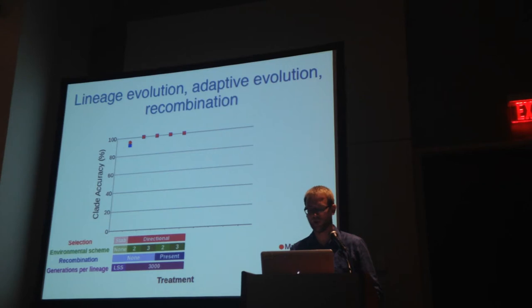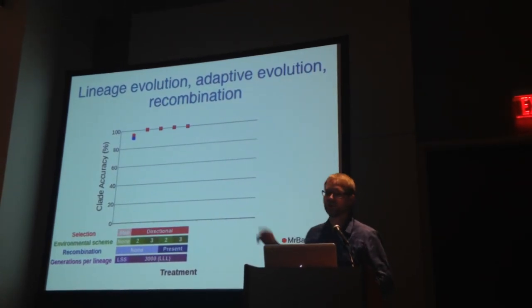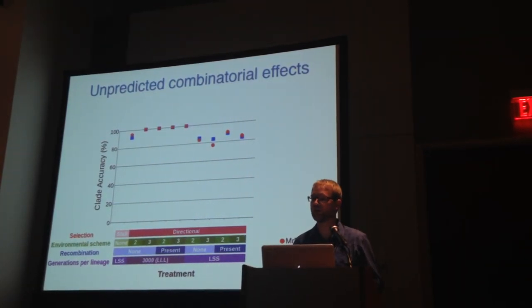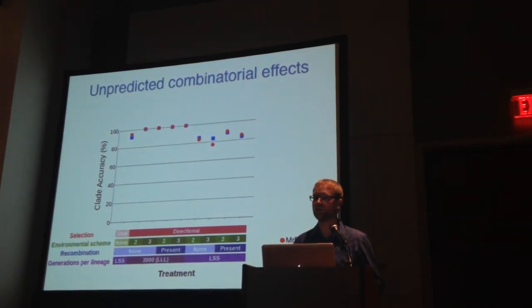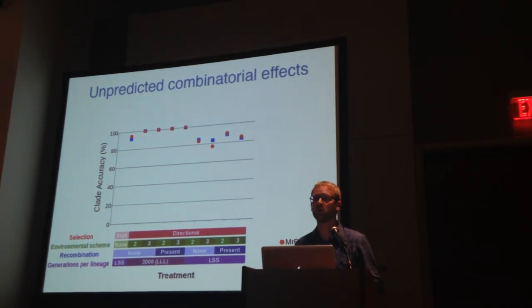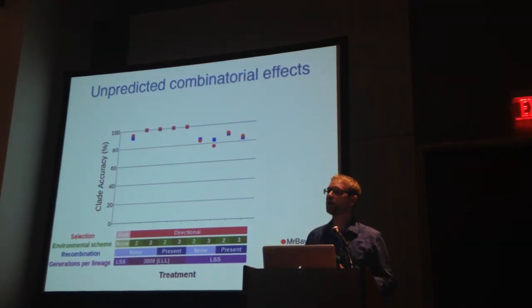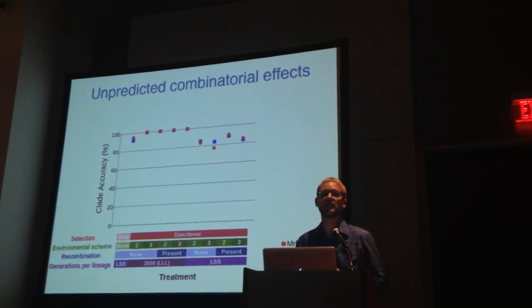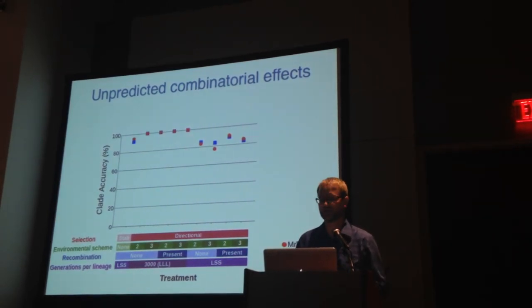Now let's combine them into the same experimental treatment. The correlate to LSS for the selection data is LLL — all just long branches. When we have all these combinations of factors at play, we're getting these really unpredicted combinatorial effects. A lot is happening on these trees and it's really interfering with our ability to infer the correct tree topology. We're not entirely sure what is going on in these instances right now, but with AVIDA's digital evolution and perfect record of everything happening, we can take a detailed look and track down all these homoplasies and attribute them to various effects.